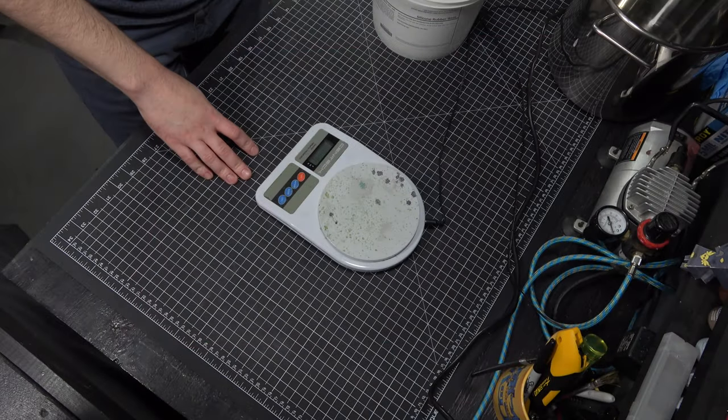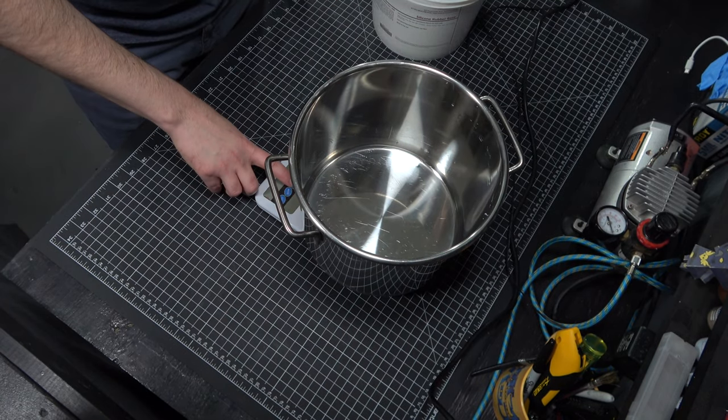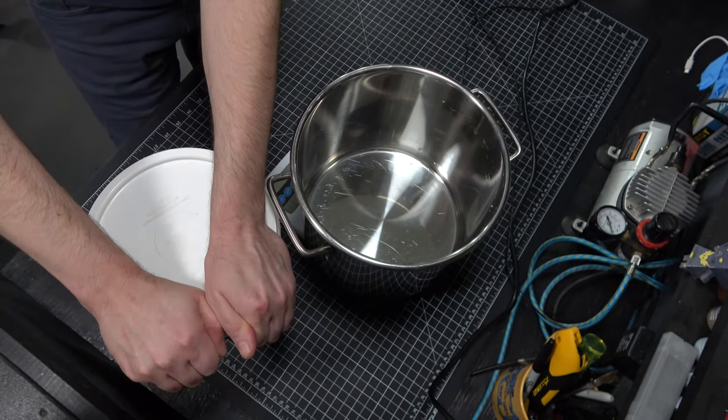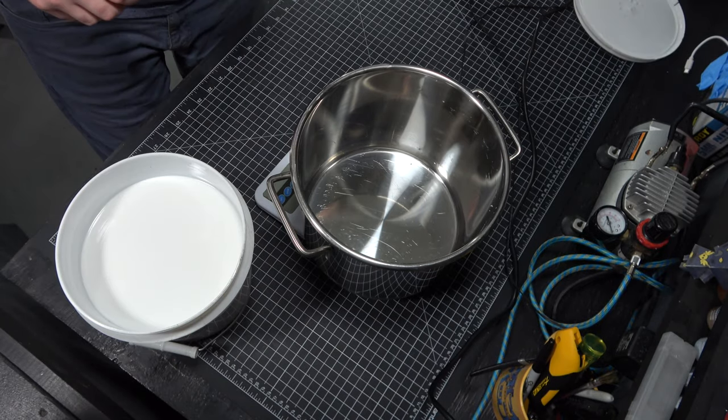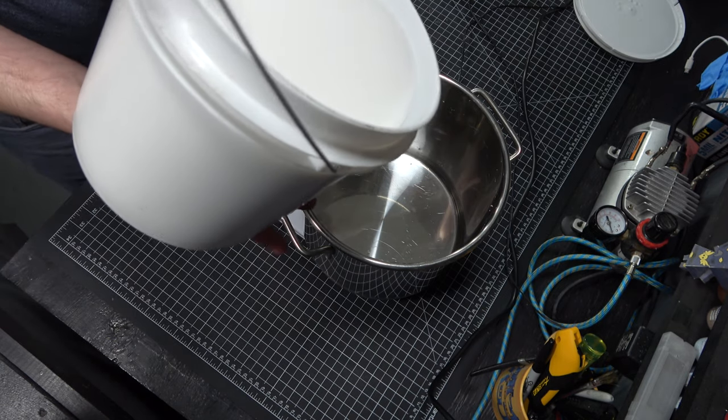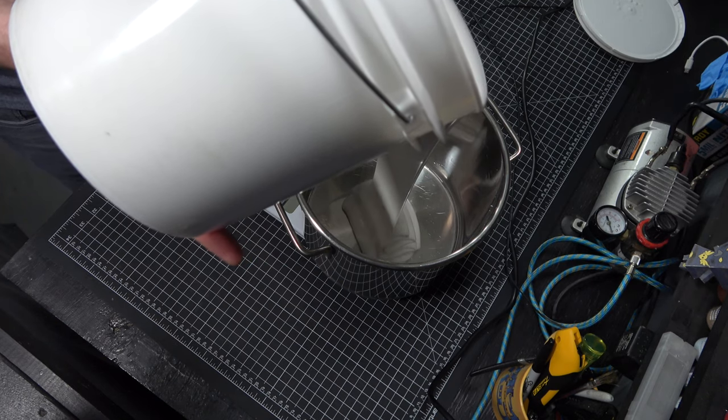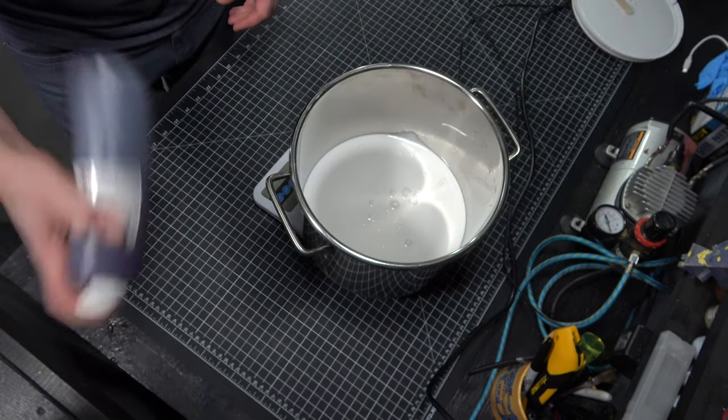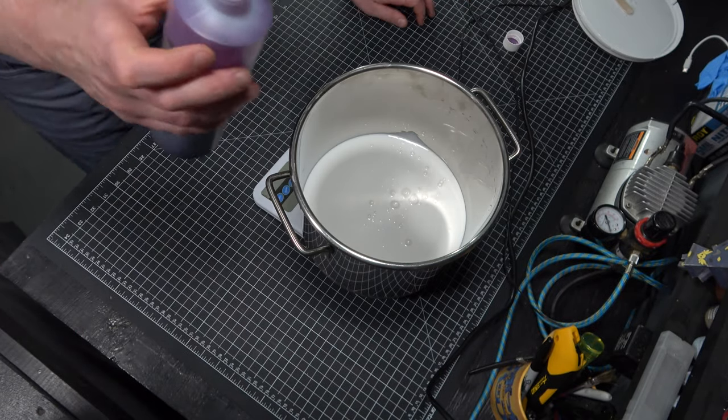Here I've got the scale out with the vacuum chamber pot that I'm gonna be mixing the silicone in. This is a tin cure silicone that I'm going with. It's pretty forgiving as far as a mix ratio, but you still want to get it very close to as accurate as you can so you don't end up with more catalyst or silicone that you can't use. It's a ten to one ratio in this case. Mixing it with a drill here. Here's the catalyst. You want to make sure you shake that really well.